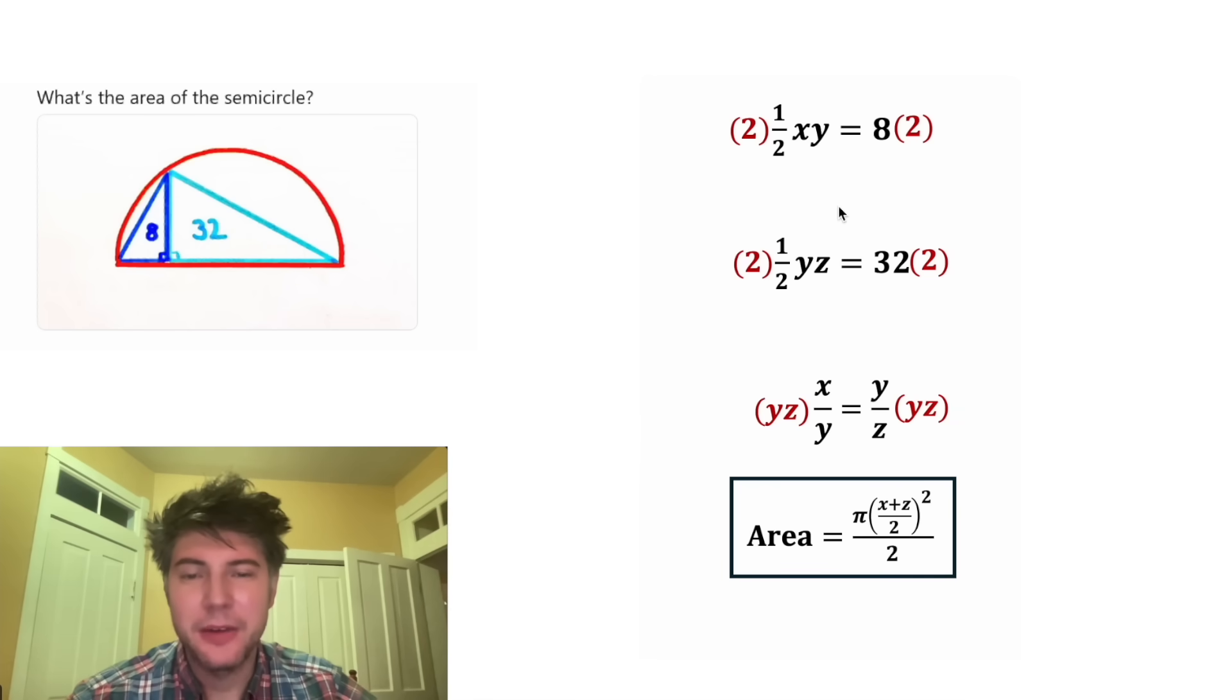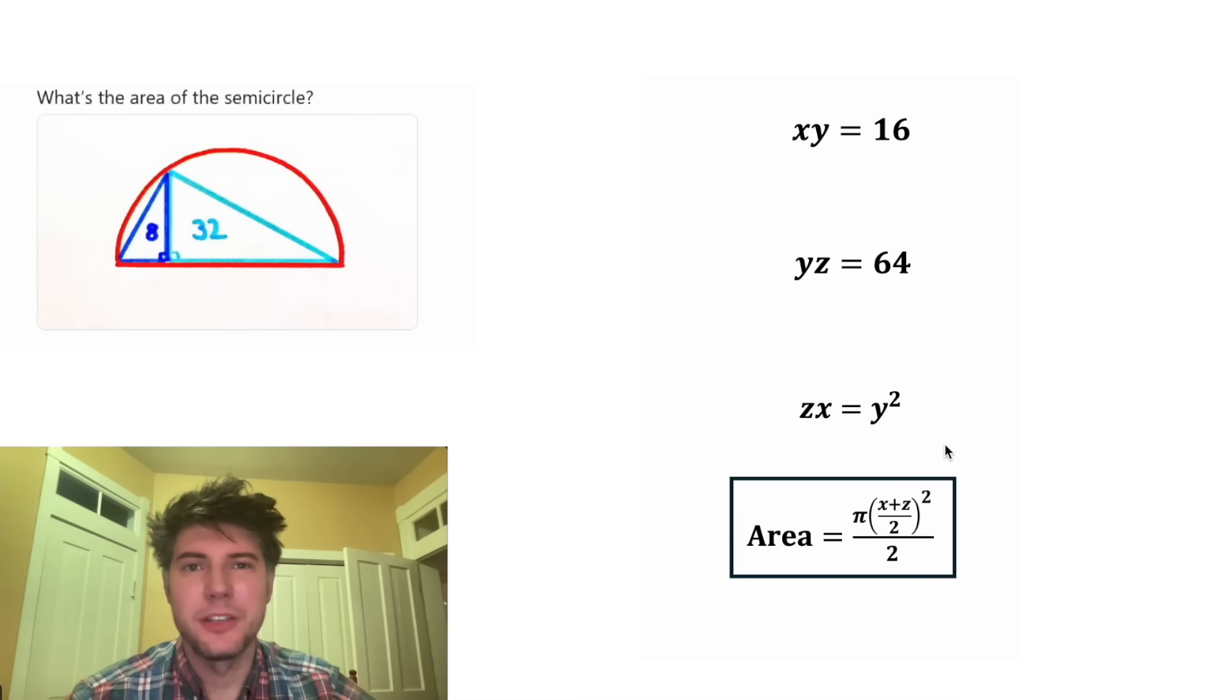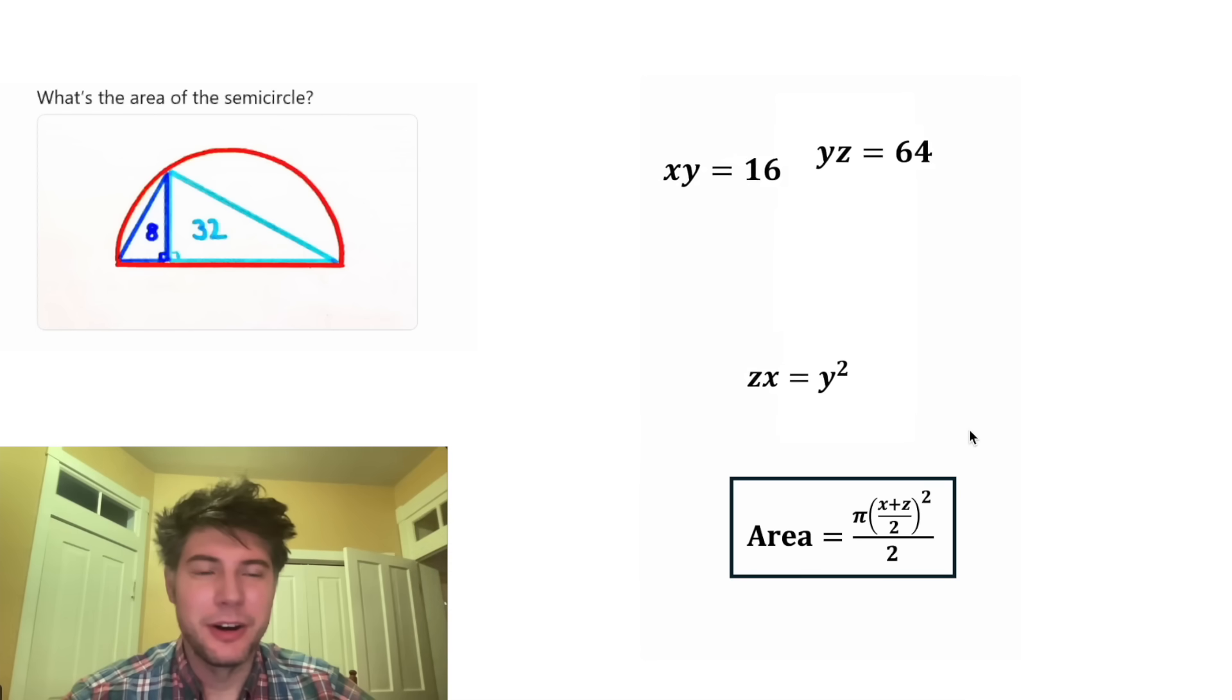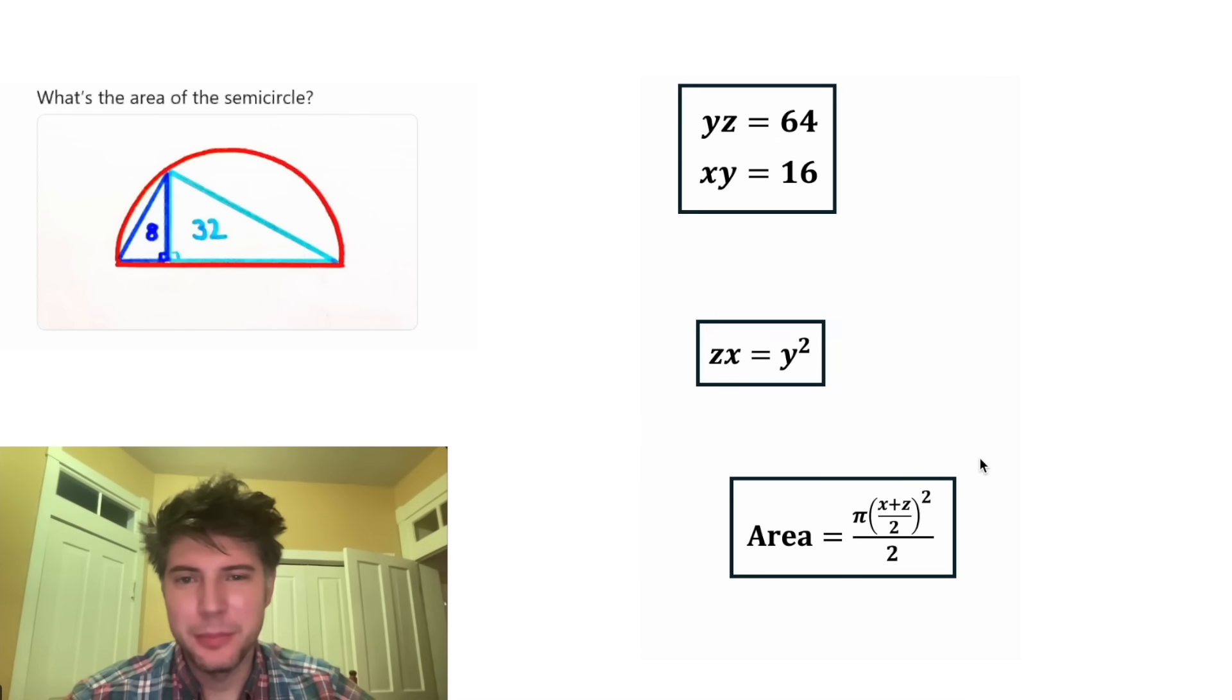For the first equation, two times one half will cancel each other out. And eight times two is 16. For this equation, these will cancel each other out. And 32 times two is 64. And then down on this one, this Y and this Y will cancel each other out. And we're left with ZX. And for this one, the Z and Z will cancel each other out. And we're left with Y times Y, which is Y squared. Now we've cleaned up our equations. Let's bring back the boxes.